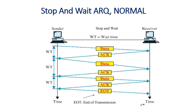Talking about the first one, that is Stop and Wait ARQ, that is Automatic Repeat Request, with a normal transmission of a data frame. For example, a data frame is sent from the sender to the receiver, and the receiver sends an acknowledgement. Until an acknowledgement is received by the sender, the sender always stops and waits with all the frames. Once the transmission is done, it will send an EOT data frame, which stands for End of Transmission.